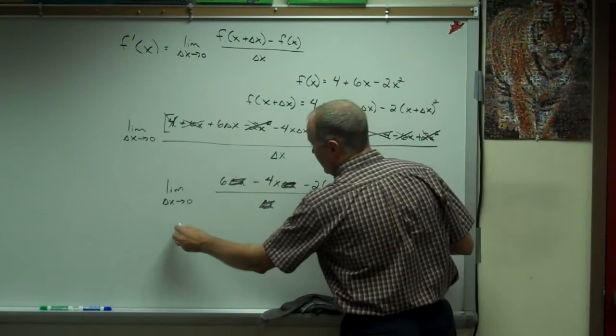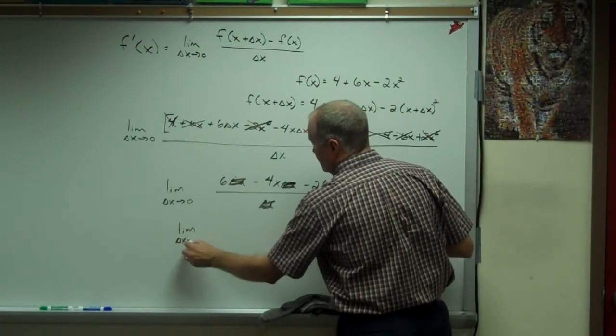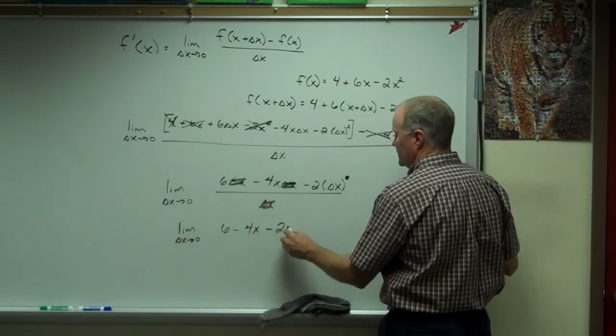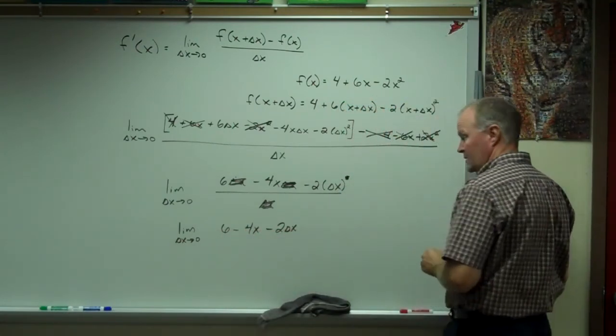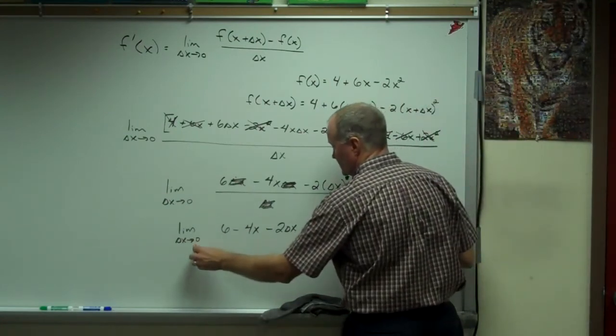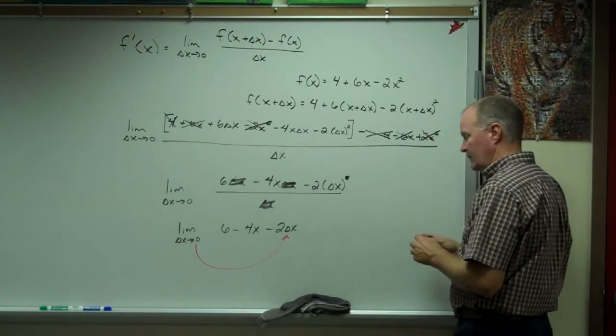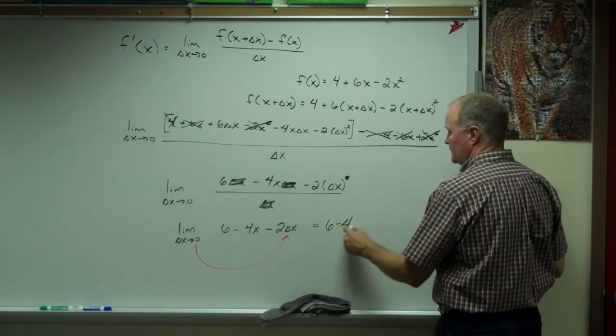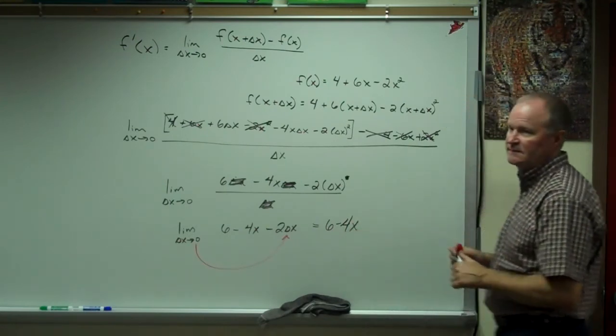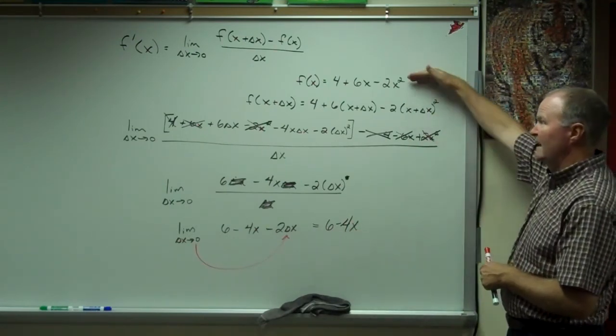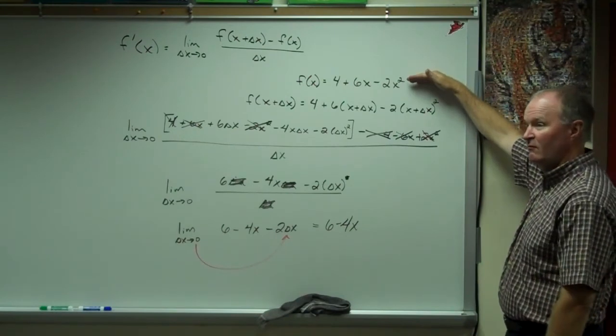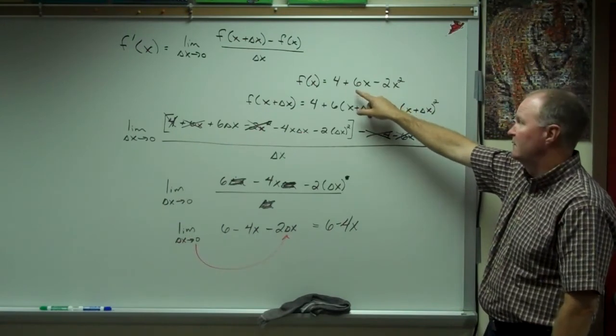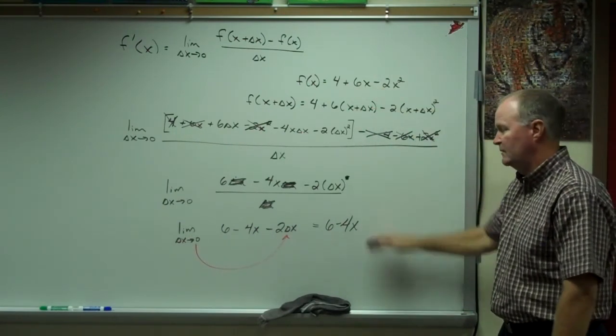I got rid of my problem child. And so now I can plug in my zero for delta x. And I'm left with the answer of 6 minus 4x. Is that what it should be? Yes. Yep. Because we know how to do that using the shortcuts now. 6 minus 4x.